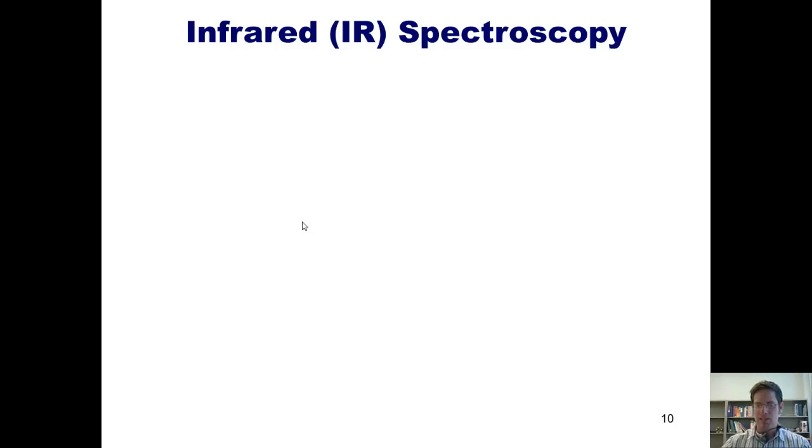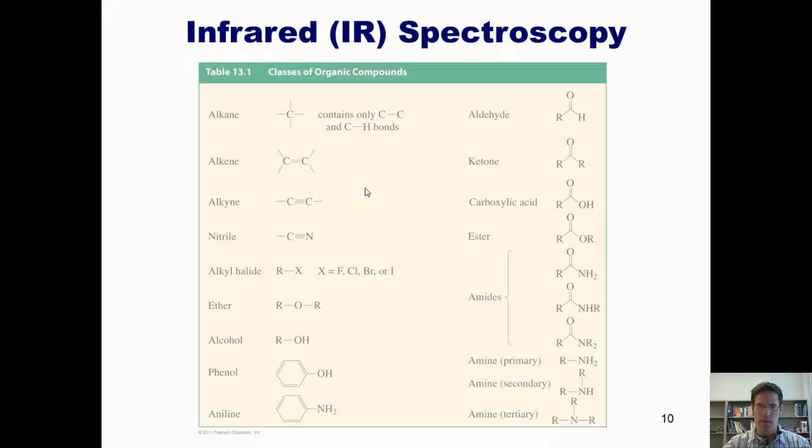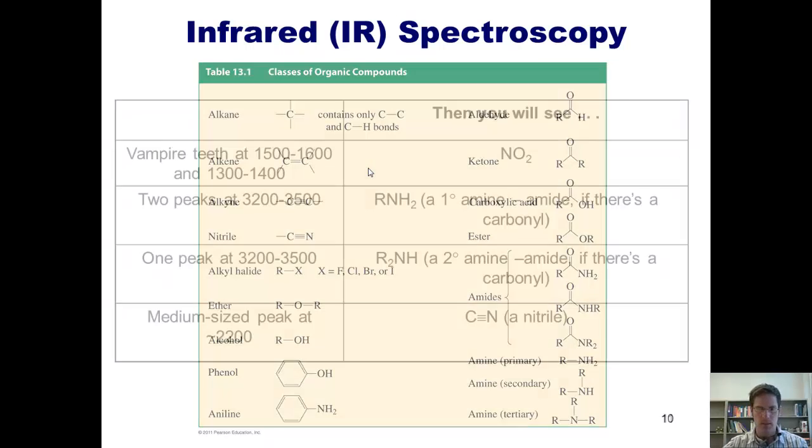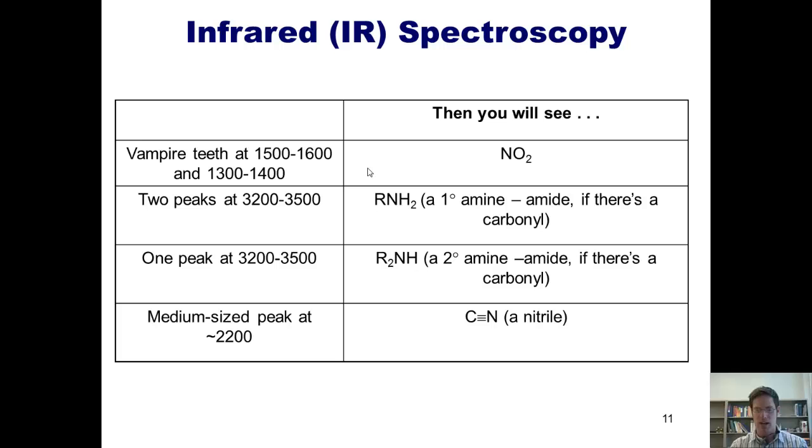Although I've shown you the only types of bonds that I typically harp on for my sophomore organic chemistry students, you should understand that IR spectroscopy can be used to see many more types of functional groups as well. Here are some taken from our class text. I honestly wish that I could say that you should never waste time memorizing all of these. However, the MCAT and other standardized exams will frequently ask questions that require one to know this information.